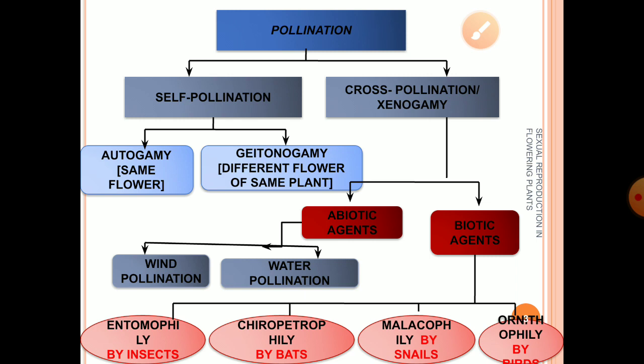The next type of self-pollination is geitonogamy. It is the transfer of pollen grains from the anther to the stigma of another flower of the same plant. Imagine one plant having four to five flowers — pollen grains are transferred from one flower to the stigma of another flower of the same plant. This is geitonogamy. It looks like cross-pollination, but it is self-pollination because genetically the pollen grains belong to the same plant.